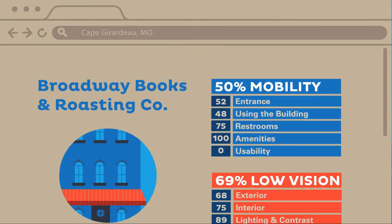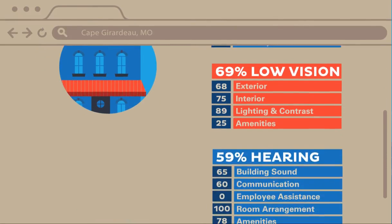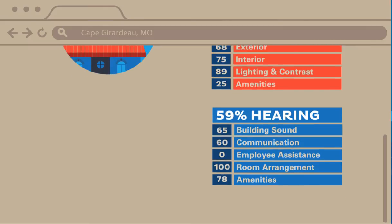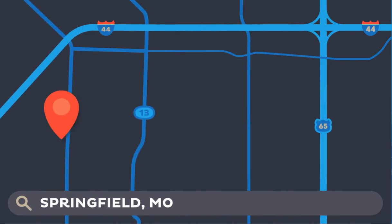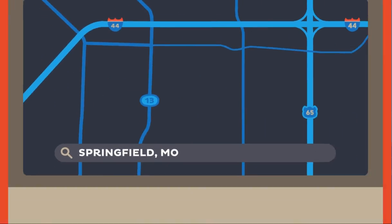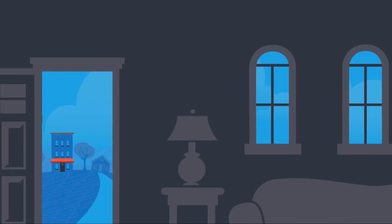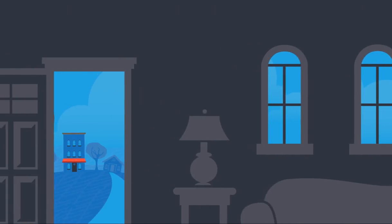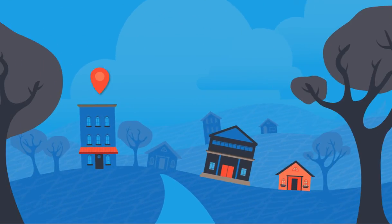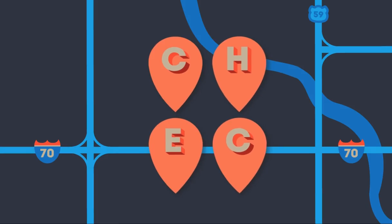Then you can share the scores on an online map. Now you can learn to use the CHEC to rate and map places in your community. So when you go where you want to go, you'll know what to expect. Check the Community Health Environment Checklist.